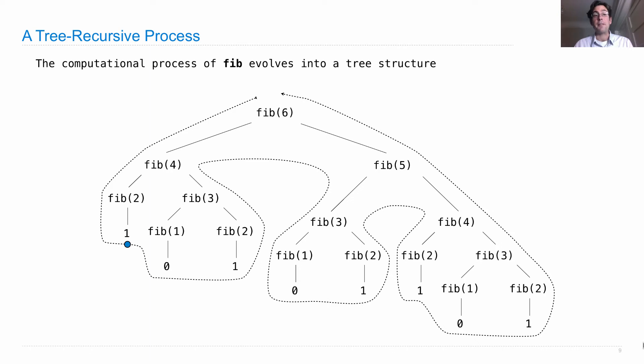In order to complete computing fib(4), we need fib(3), which includes fib(1) and fib(2). Now we can compute fib(3) as 1. Now we can compute fib(4) as 2.